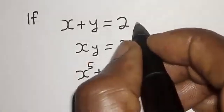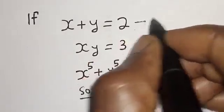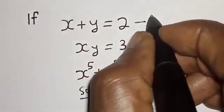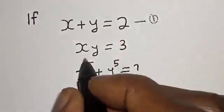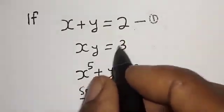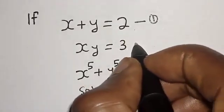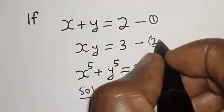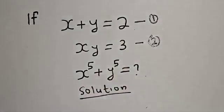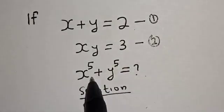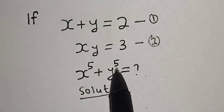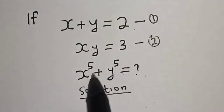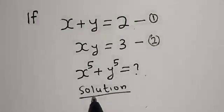s plus y is equal to 2 — let's call this equation 1. xy is equal to 3 — let's call this equation 2. Then in order to find the value of s raised to power 5 plus y raised to power 5, let's simplify this.